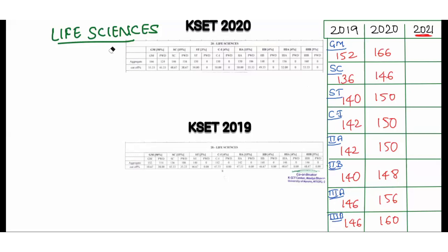This is about life sciences expected cutoff. Before going to this cutoff matter, you need to know about your marks and how to calculate the marks and its percentage. You write your examination for 300 marks. Taking one example: a candidate who scored around 150 marks by seeing the answer key — that candidate will come around 150 marks.